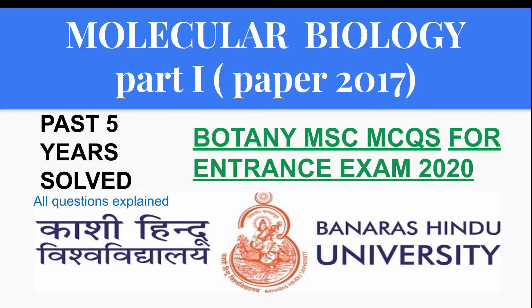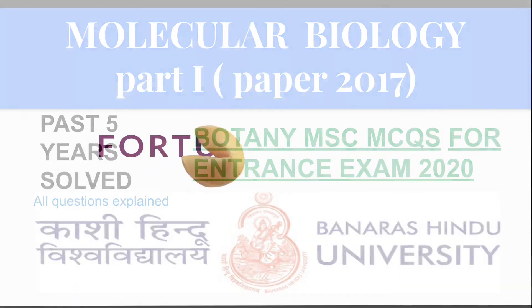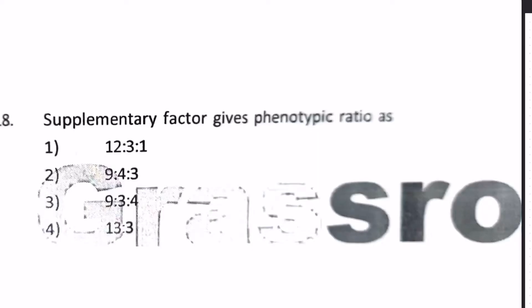Hey guys, this video is on molecular biology part 1 and we have solved paper 2017 here. Our first question is: supplementary factor gives phenotypic ratio as 1) 12:3:1, 2) 9:4:3, 3) 9:3:4, and number 4 is 13:3.